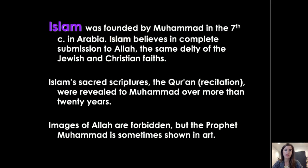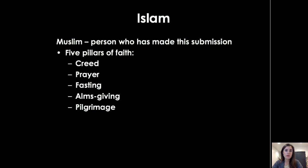Images of Allah are forbidden, so again this idea of being really cautious about the images used, but the prophet Muhammad is sometimes shown in art, although it can be controversial. The five pillars of faith for Islam are: the Creed — that Allah is God and Muhammad is his prophet — prayer five times daily towards Mecca, fasting at certain periods including Ramadan, almsgiving or giving to charity, and pilgrimage to Mecca. A Muslim is a person who has made a submission to God.